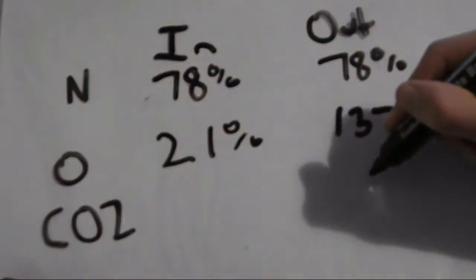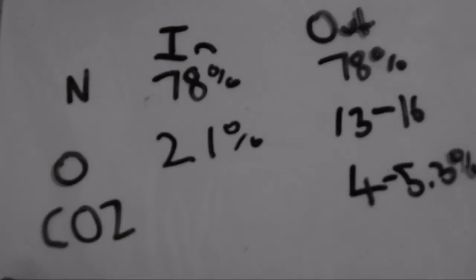Oxygen levels only go down slightly, with us breathing out 13% to 16% of oxygen back out.